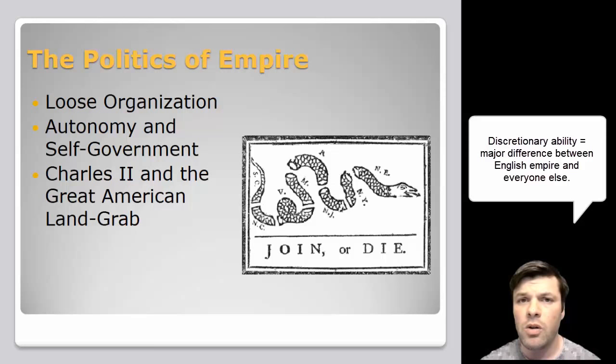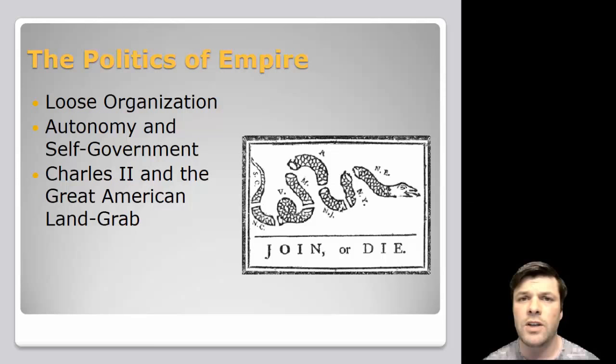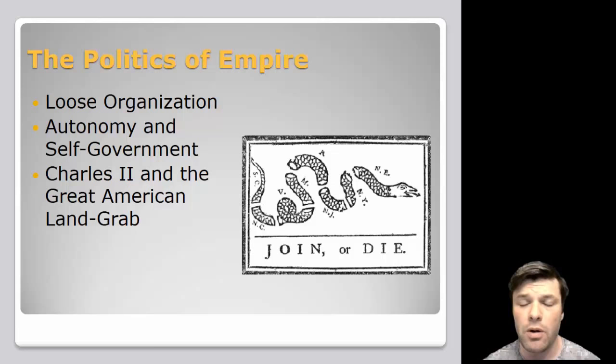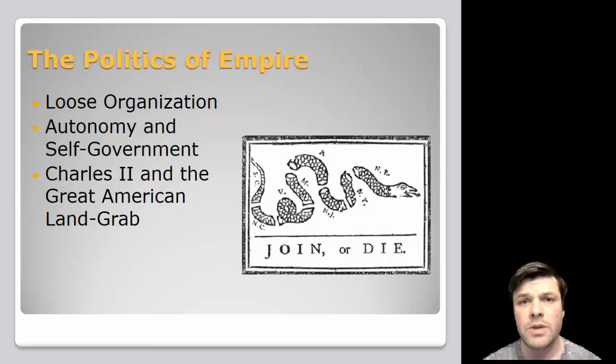The government was really encouraging people to come over, incentivizing it with land, and loosely governing over those people once they got there. If you want self-representative government, you can have it. If you want an independent court system, that's fine too. Unlike the Spanish or the French, the English model of imperialism is based on agriculture, and you need labor for agriculture. So it really is a case of the more the merrier — you want to entice as many people as possible to come over, and giving them some say in their day-to-day life was one of several ways the government was able to do that.